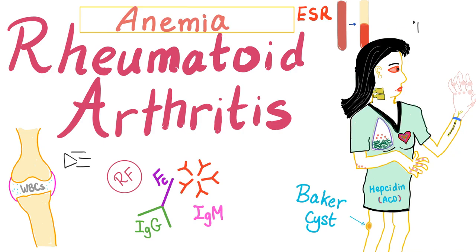The typical age of presentation is 40 to 60 years, so her hair is kind of grayish, starting to become gray. She has the articular manifestations of Rheumatoid, and the extra-articular manifestations such as the Rheumatoid Nodules, the Anemia of Chronic Disease, the Interstitial Lung Disease with Pleural Effusion, the Pericarditis with Pleural Effusion, the Episcleritis, and the Baker's Cyst. And she has the Atlanto-Axial Subluxation, which is an articular manifestation.